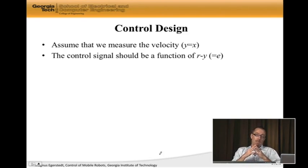Let's assume that we can measure directly the velocity, and recall that the state x is the velocity. The measurement, or the output, is what we call y. So y is actually directly equal to x in this case. So we have some way of measuring velocities, which you typically have. You have a speedometer in your car, so we know roughly what the velocity is.